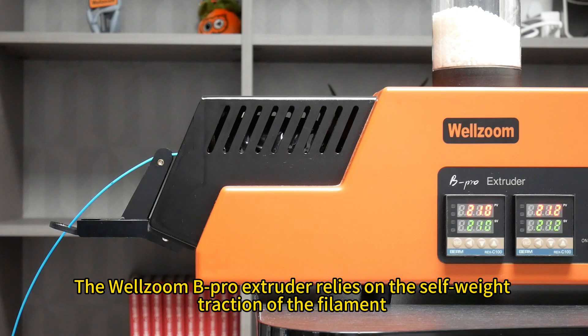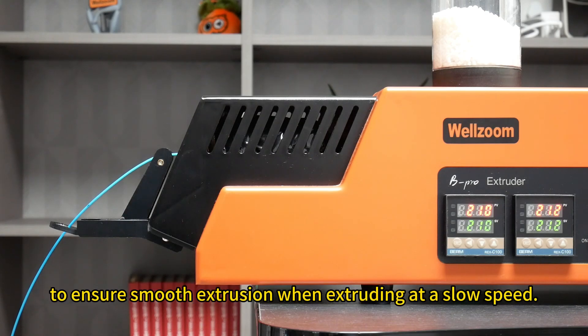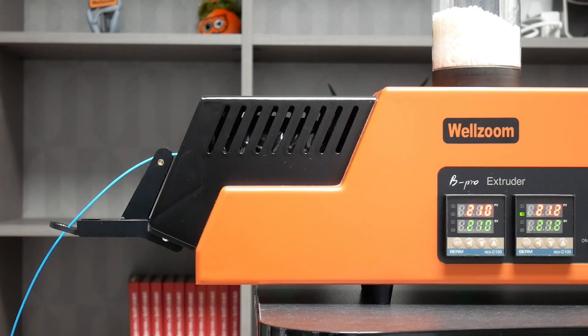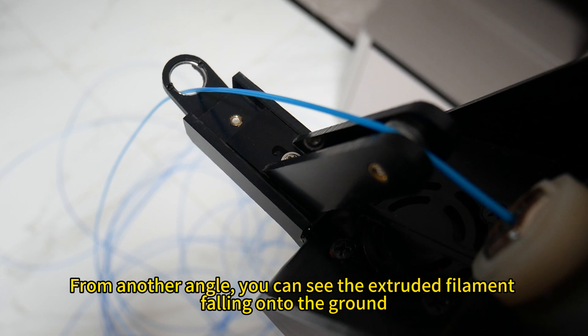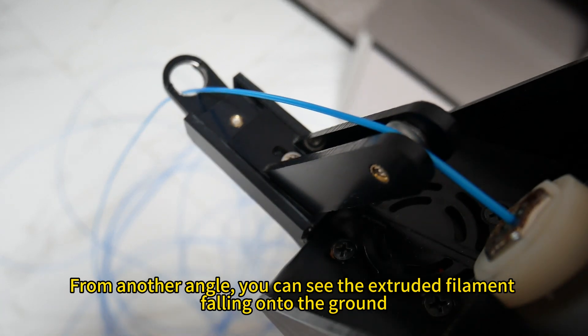The Wellzoom B-Pro extruder relies on the self-weight traction of the filament to ensure smooth extrusion when extruding at a slow speed. From another angle, you can see the extruded filament falling onto the ground.